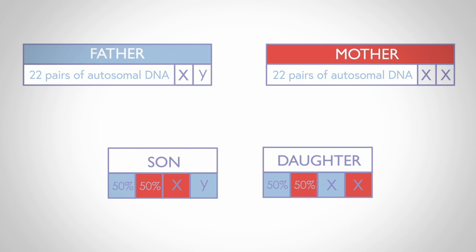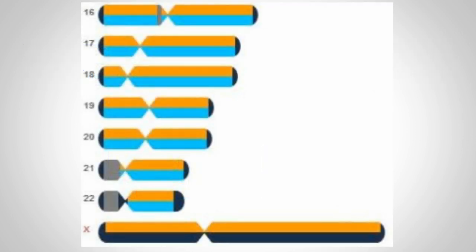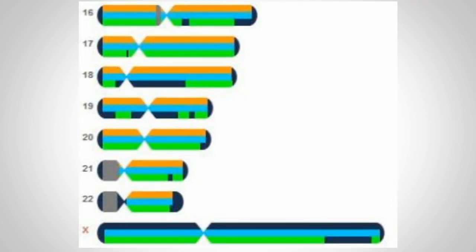This can be displayed in a utility called a chromosome browser. Using an example for a male, first you can see the chromosomes showing the segments of autosomal DNA inherited from each parent: yellow for the mother's DNA and blue for the father's DNA. The next image shows the segments for the same male, with those shared with the father coloured yellow, those shared with the mother coloured blue, and those shared with a sibling coloured green.